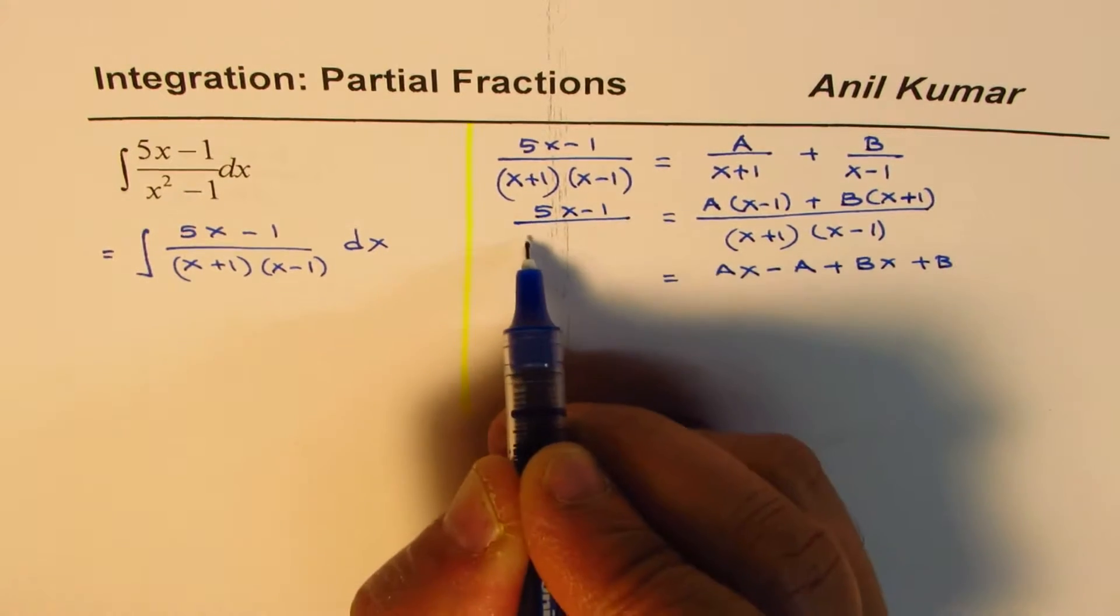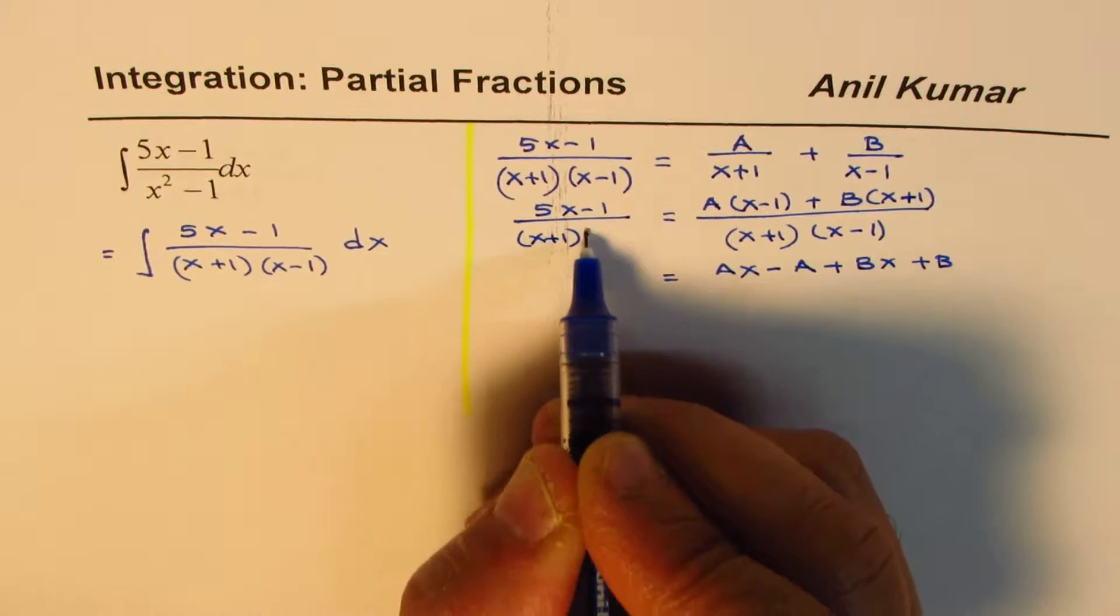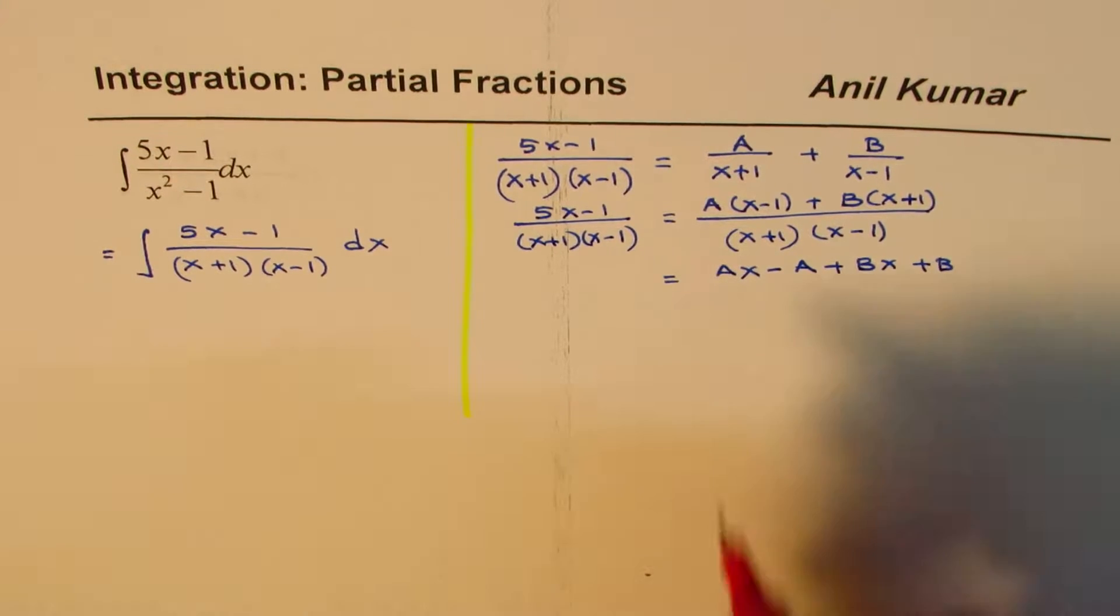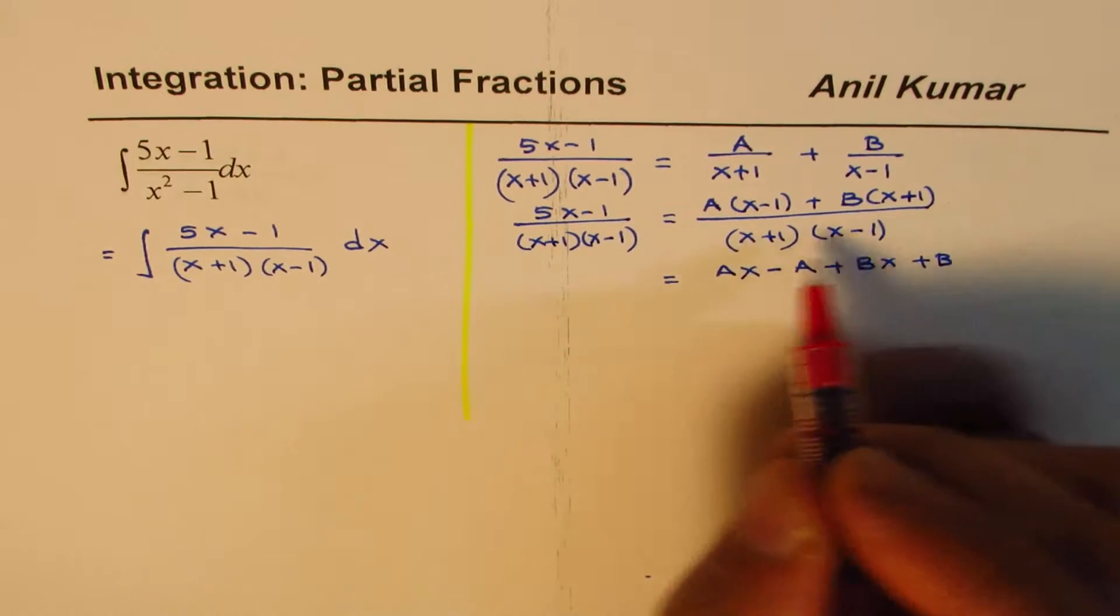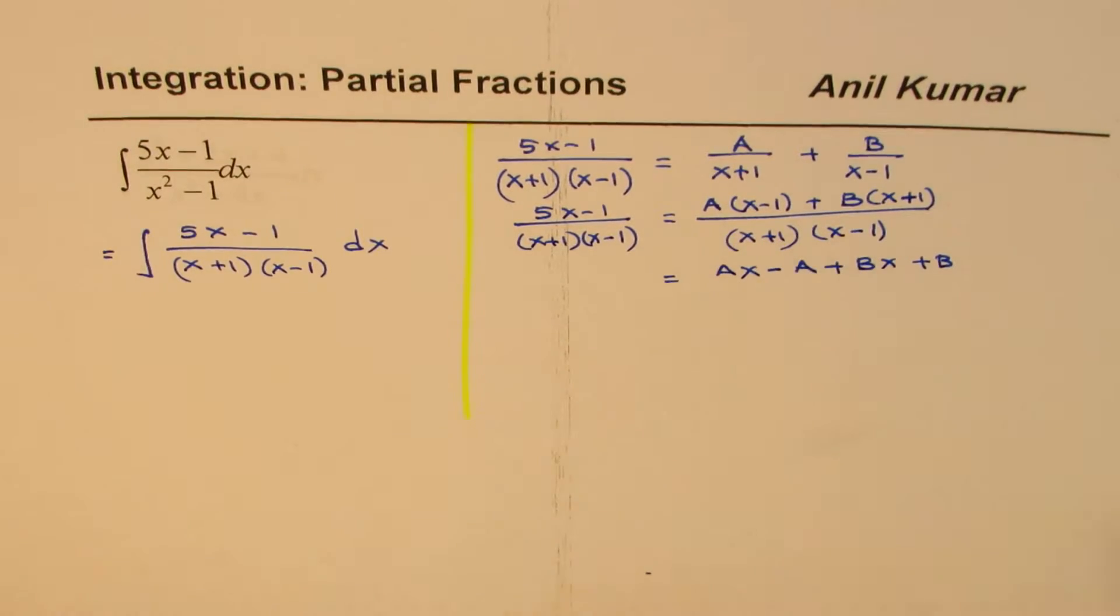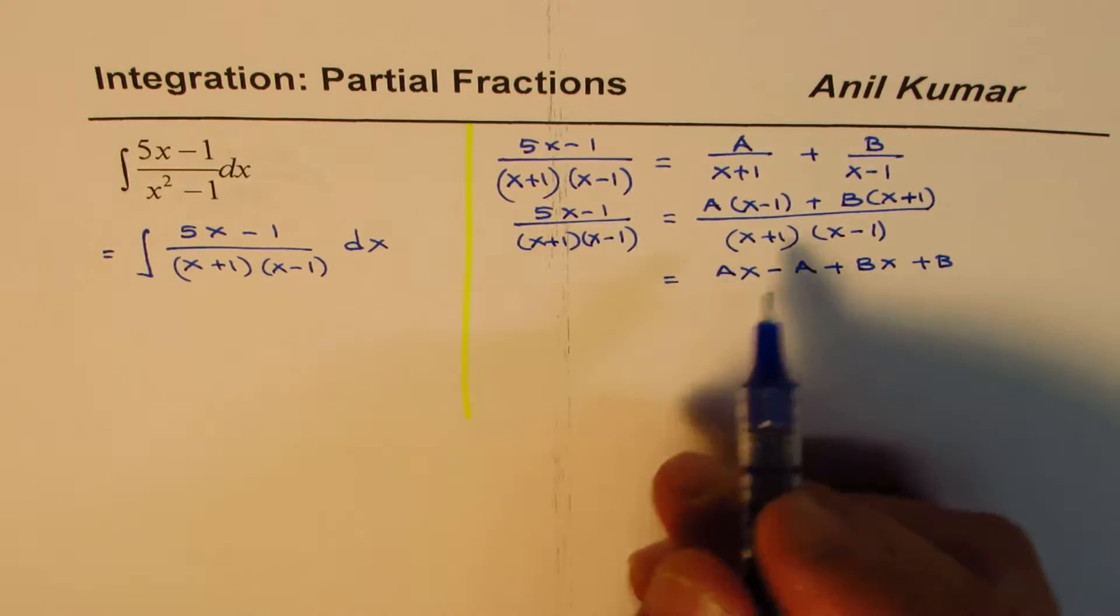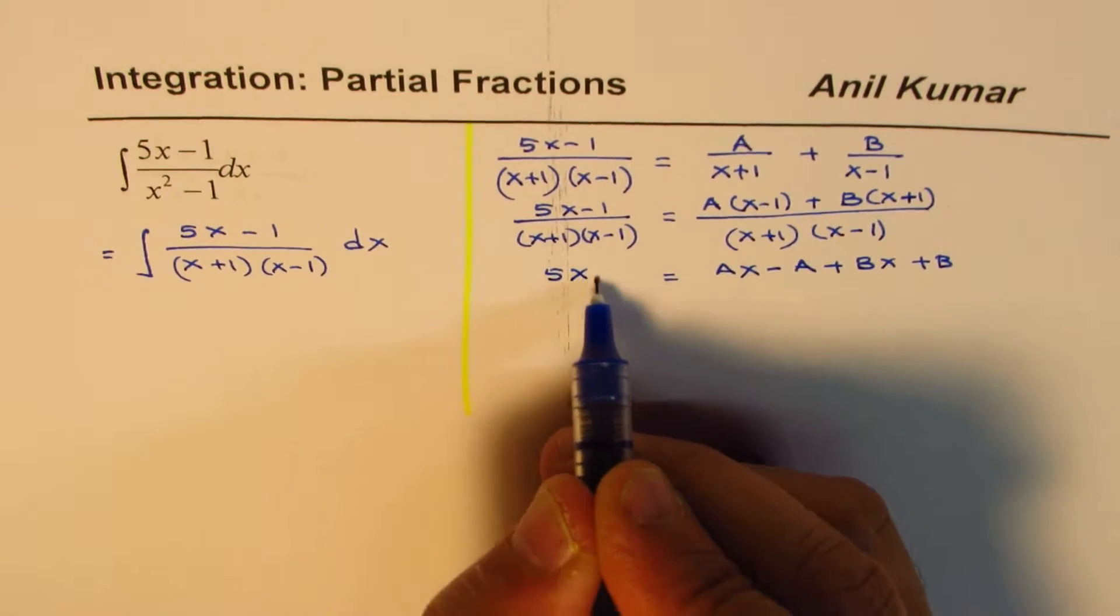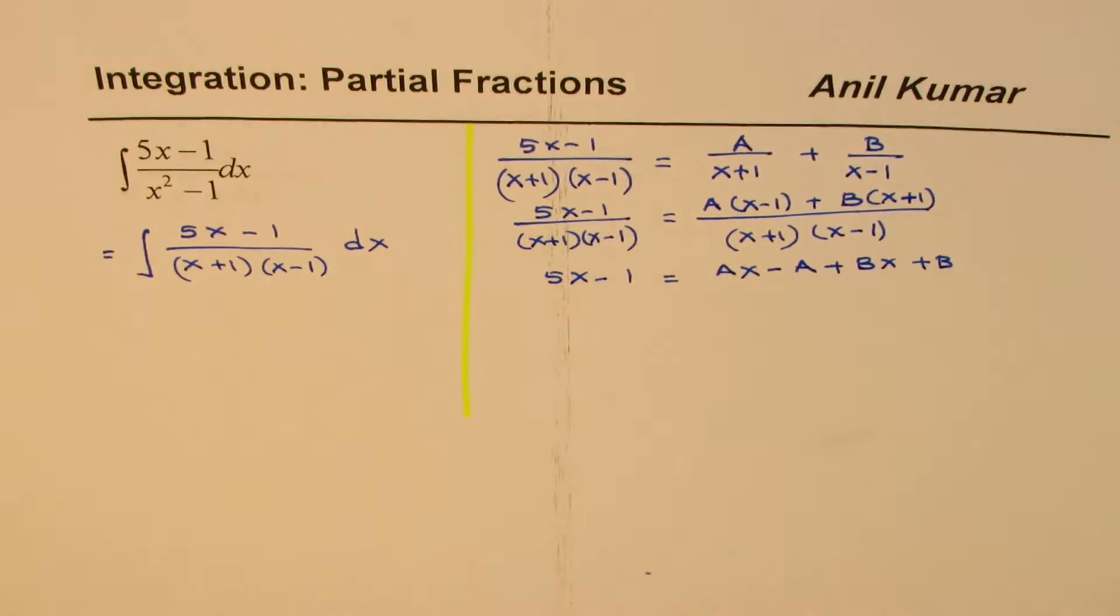So if I expand this, I get A times x minus 1 plus B. What we can do at this stage is, let me rewrite this, 5x minus 1 divided by x plus 1 times x minus 1. So at this stage, if I divide both sides by x plus 1, x minus 1, they have same denominators. Then we can write this equation as 5x minus 1 equals to both numerators.